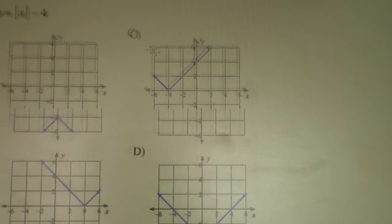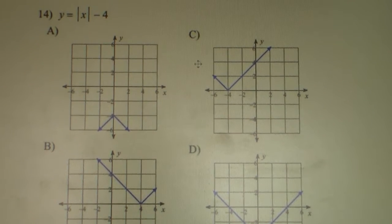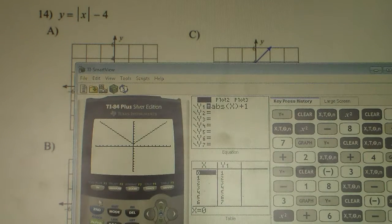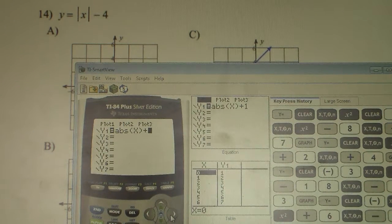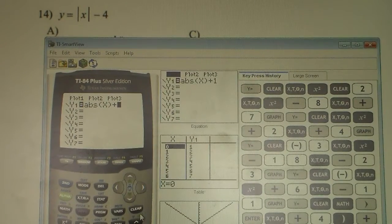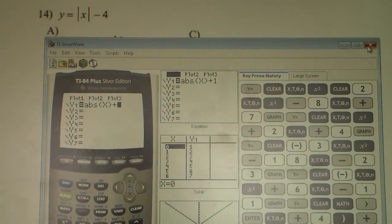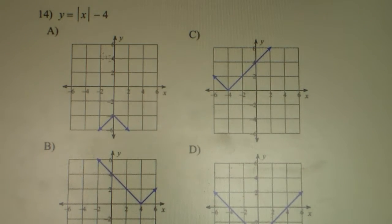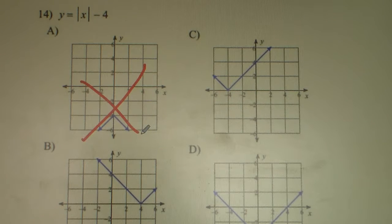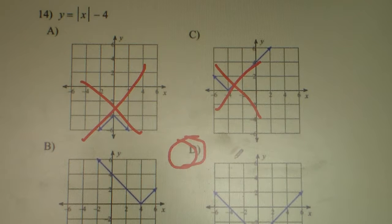Number 14. We have Y equals the absolute value of X minus 4. It's a positive V, and minus 4 is where it's crossing the Y axis. Since it's a positive V, A is not correct because it's a negative. It's crossing negative 4 on the Y axis — that's crossing on the X. D is the correct answer for number 14.